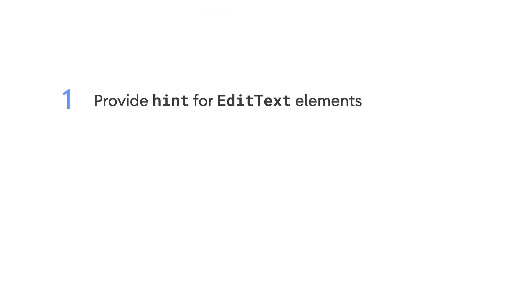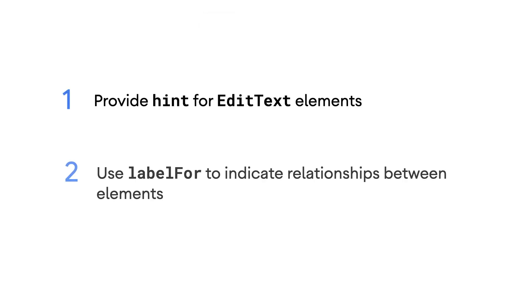In summary, be sure to provide a hint for EditText elements, and when one element describes the intent of another, use the LabelFor attribute to indicate their relationship. Thanks for watching, and stay tuned for more tips on how to make your Android app more accessible for all users.